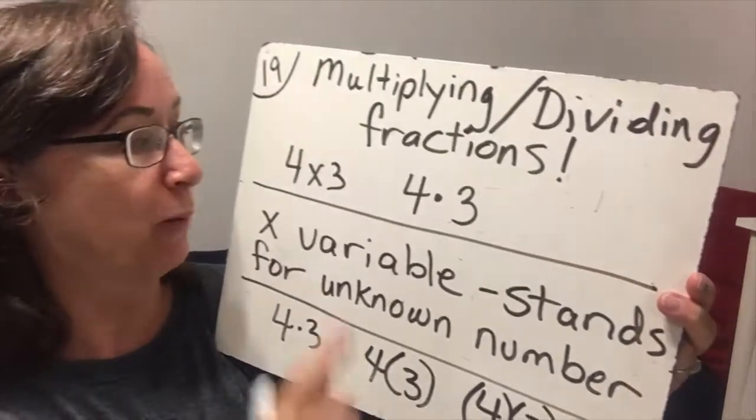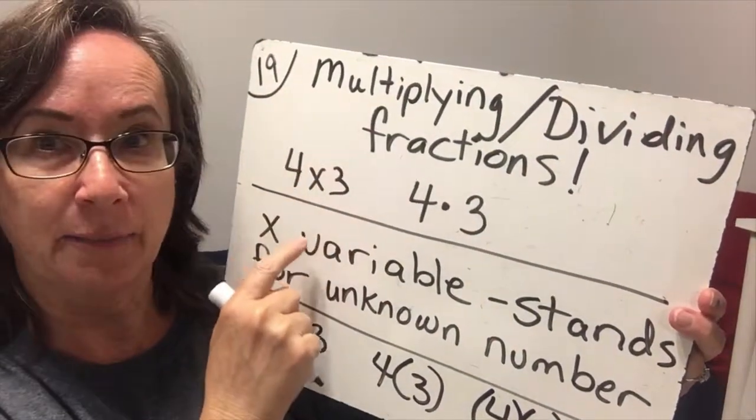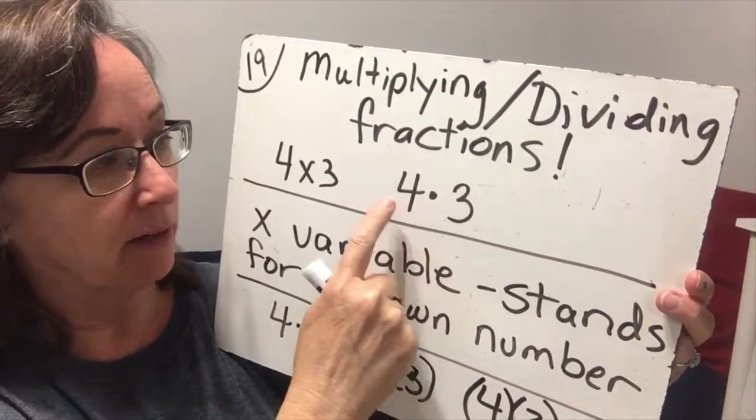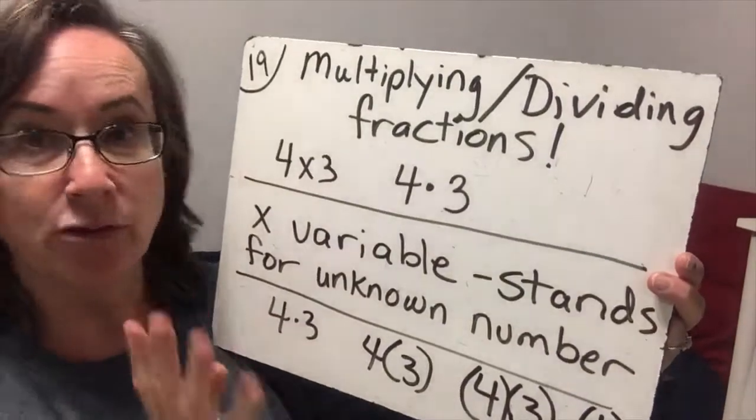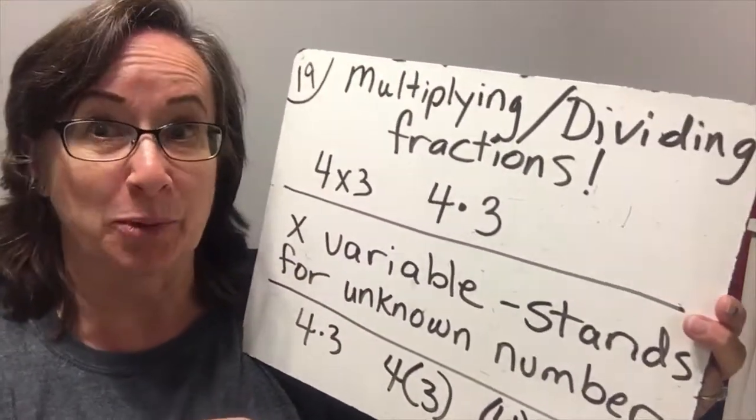So up until now, we have expressed multiplication with a little times sign, 4 times 3, or a dot that is in between 4 times 3. And those are both great, but when we're in algebra, which you're in pre-algebra, and so you're starting to learn algebra concepts.